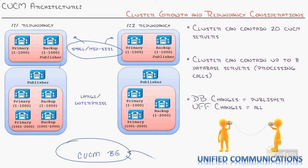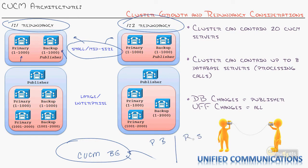In the small-to-mid-sized world, up to about 1,000 phones, there isn't much difference between one-to-one and one-to-two redundancy options. Now, when I talk about primary and backup, it's very easy to confuse that with publisher and subscriber — these are two different worlds. Take a piece of paper: on one side write 'primary backup,' on the other write 'publisher subscriber.' Publisher/subscriber is all about the database. Primary/backup is all about runtime — how phones are registering and processing calls.